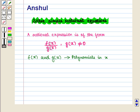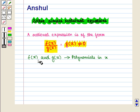We know that a rational expression is of the form f of x upon g of x, where g of x is not equal to 0, and f of x and g of x are polynomials in variable x.